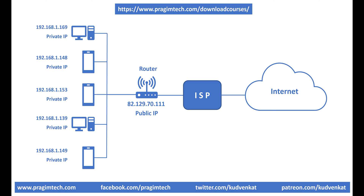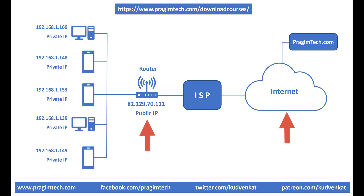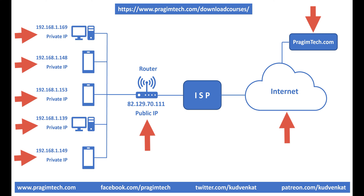With this setup, let's say from one of our computers we request an article from a website like pragimtech.com on the internet. The internet knows your router's public IP address — this is how the internet identifies your computer. So it sends the response from pragimtech.com to your router using this public IP address. Your router in turn knows the private IP addresses of each of your devices connected to your home or office network, so it forwards that response to the respective device.